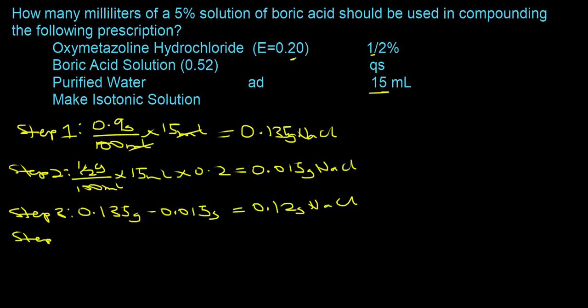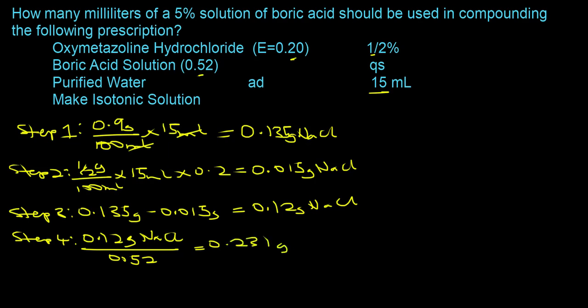In step four, you divide step three by the E-value of boric acid. So step four is 0.12 grams sodium chloride divided by the E-value 0.52, and that's going to be equal to 0.231 grams of boric acid.